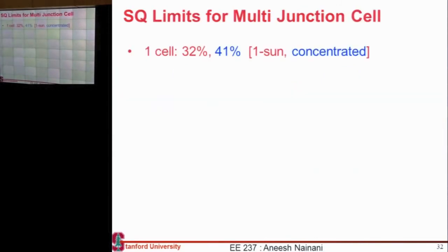If you take a single cell, you get 41%. If you take one cell, you get 32%. If you take concentrated sunlight, you get 41%. If you take a two junction cell, you get 42%. If you take a three junction cell, you get 48%. If you take a four junction cell, you get 52%. So what do you think? If I go to essentially infinite junctions, I should be able to get 100%? If I go to infinite cell, it's less than what Ben said, it's only 86%.